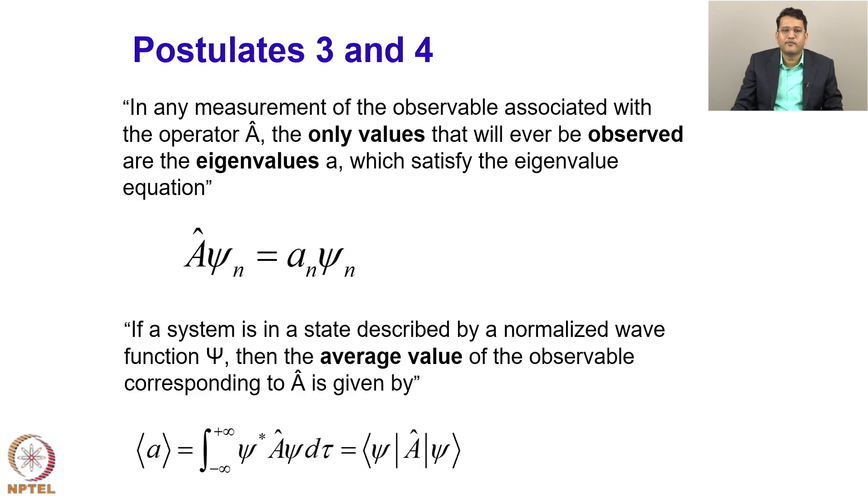Now, the fourth postulate goes on: if a system is in a state described by a normalized wave function psi, then the average value of the observable corresponding to A is given by this expectation value relation. This postulate is very important for property calculation because remember we have an eigenvalue equation only for the energy, which is Schrodinger equation.